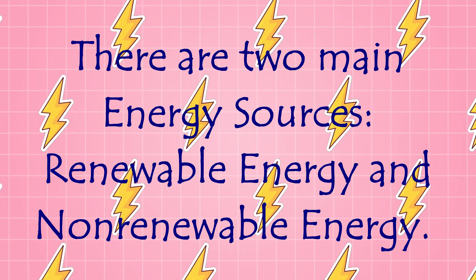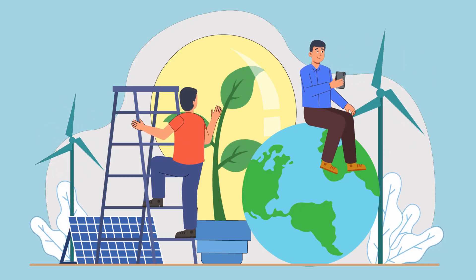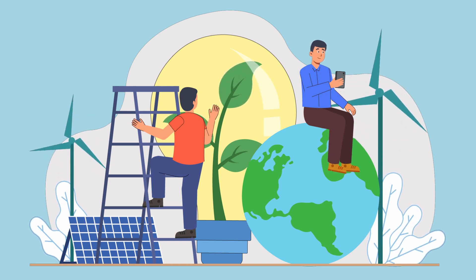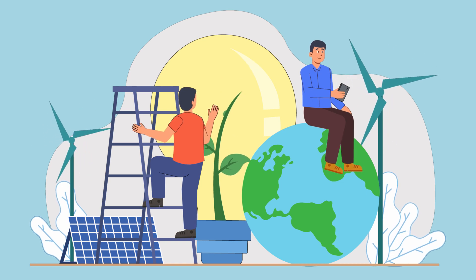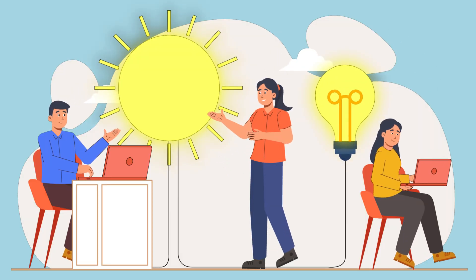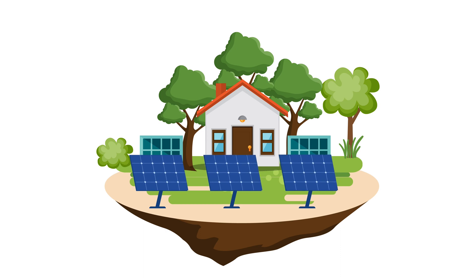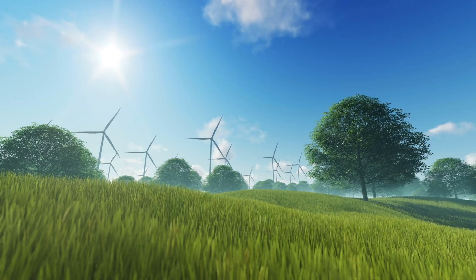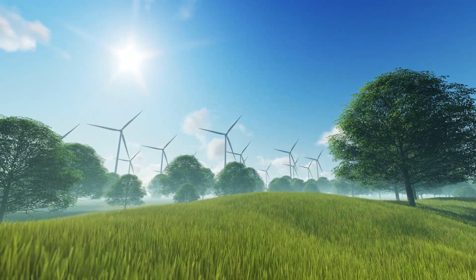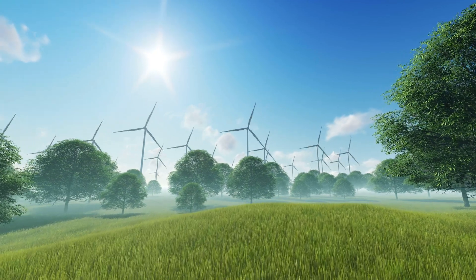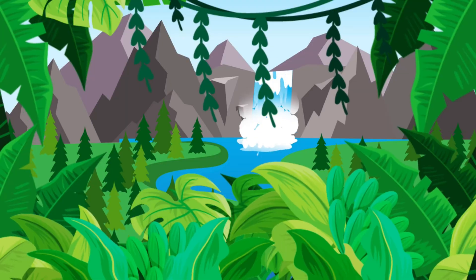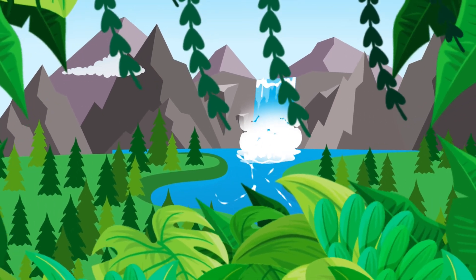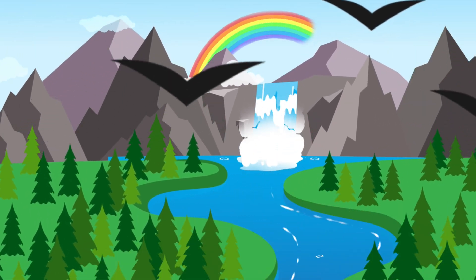There are two main energy sources. Renewable energy sources are those that can be replenished naturally and are sustainable over the long term. They often have a lower environmental impact compared to non-renewable sources. Common renewable sources include solar energy, wind energy, and hydropower.